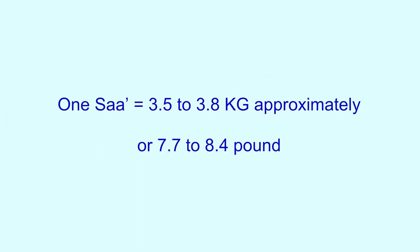One saa is equal to something between 3.5 to 3.8 kg, or if you want to give in pounds, then it is something between 7.7 to 8.4 pounds.